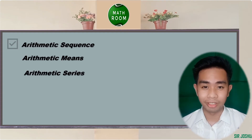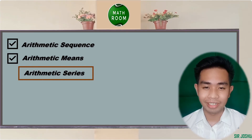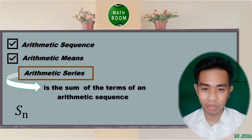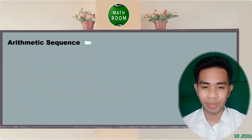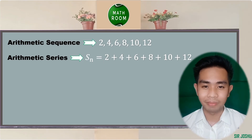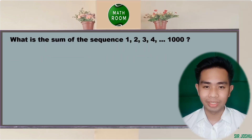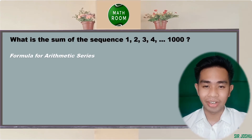Now let me present arithmetic series. An arithmetic series is the sum of all the terms of an arithmetic sequence, denoted by S sub N. For example, with the sequence 2, 4, 6, 8, 10, 12, the arithmetic series is S sub N equals 2 plus 4 plus 6 plus 8 plus 10 plus 12, or S sub N equals 42. What if we want to find the sum of 1, 2, 3, 4 up to 1000? The fastest way is using the arithmetic series formula.